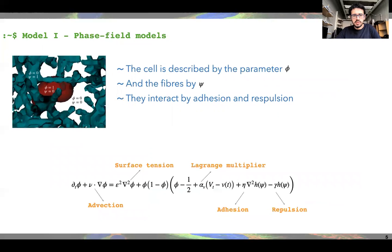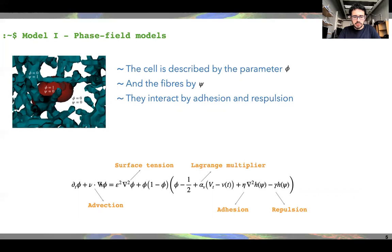The first approach we used is the phase field model. In the phase field model, we have functions called order parameters used to describe the different components in our system. Phi is used to describe the cell in red, and psi is used to describe the fibers in the extracellular matrix. The fibers and cells interact by adhesion and repulsion, with an advective term that makes the cell move in one direction with a constant velocity, and other terms responsible for maintaining the cell shape.